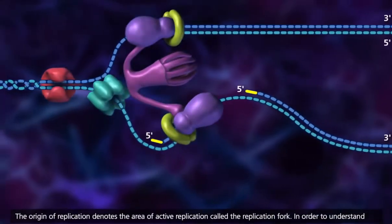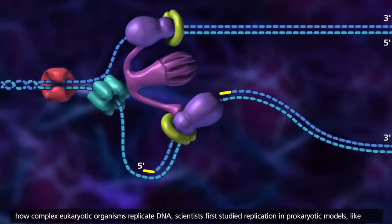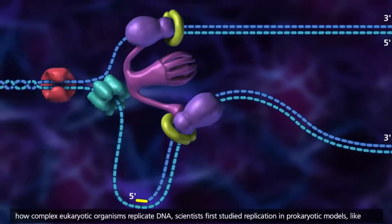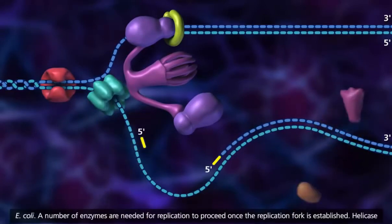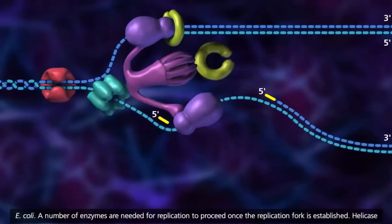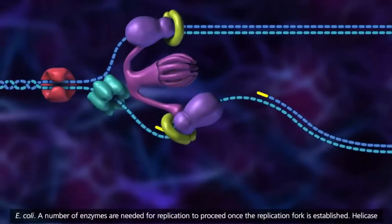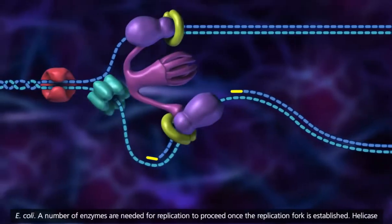In order to understand how complex eukaryotic organisms replicate DNA, scientists first studied replication in prokaryotic models like E. coli. A number of enzymes are needed for replication to proceed once the replication fork is established.